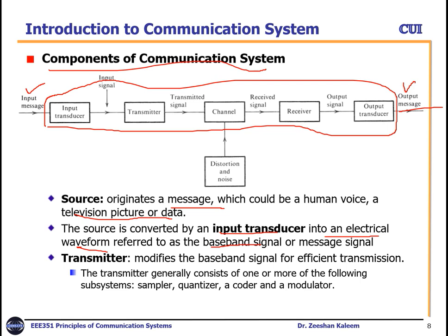After converting the input into an electrical waveform — the baseband or message signal — it is passed to the transmitter. The transmitter has a number of processing blocks. It transmits the message into the air or wireless medium, producing the transmitted signal. That medium is called the channel. After passing through the channel, we receive the received signal, but the signal passing through the channel introduces distortion and noise.